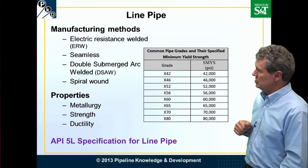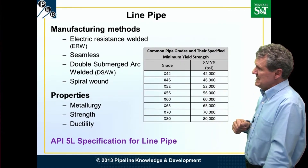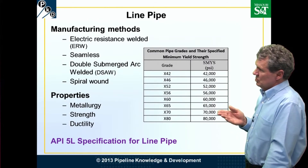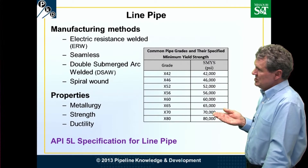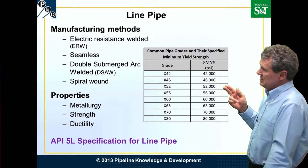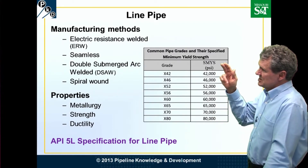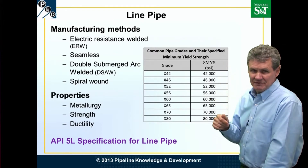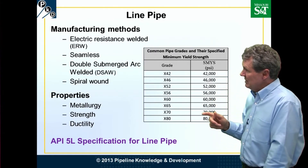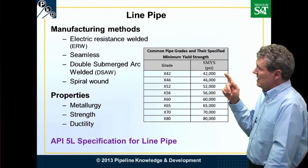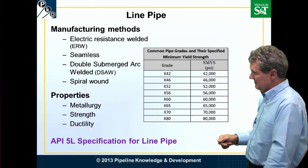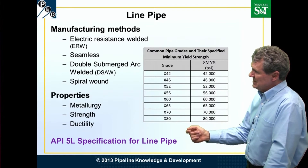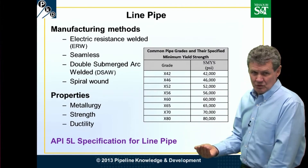This table shows different grades of pipe. The grade — X42, X46, down to X80 — has to do with the SMYS, the specified minimum yield strength of the steel in the pipe. X42 has a SMYS of 42,000 PSI, and it follows logically from there. The API specification for line pipe is 5L.